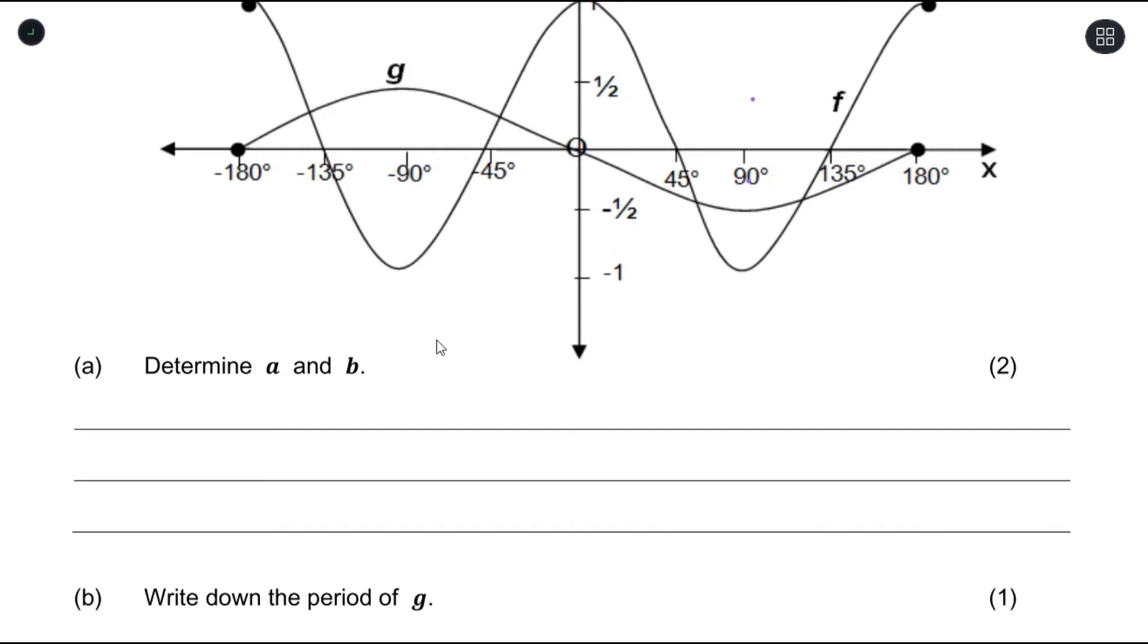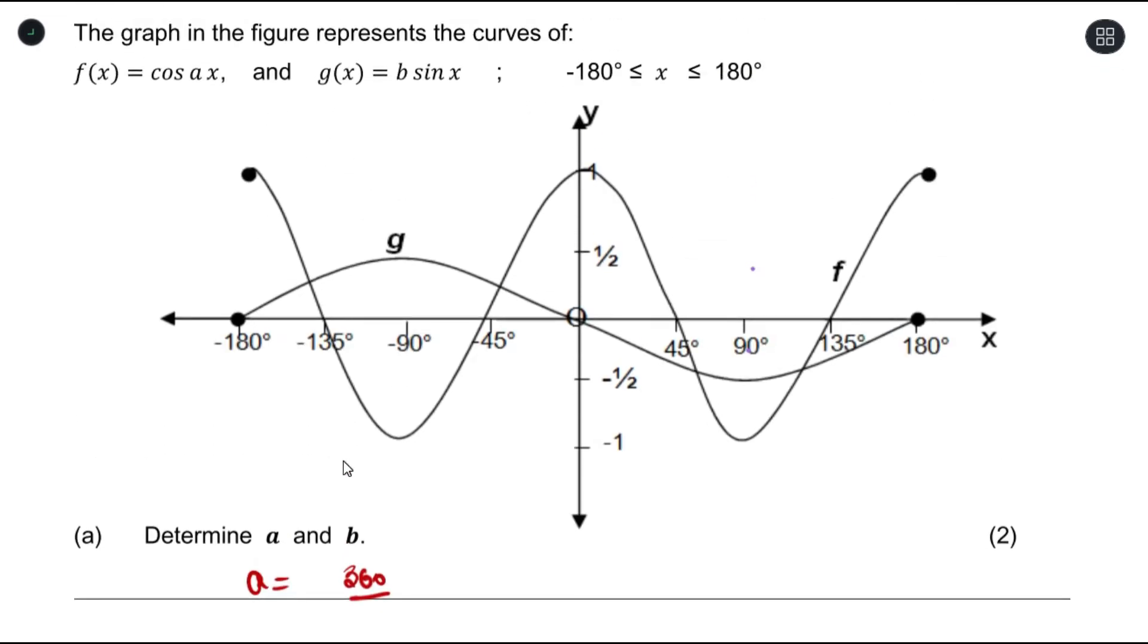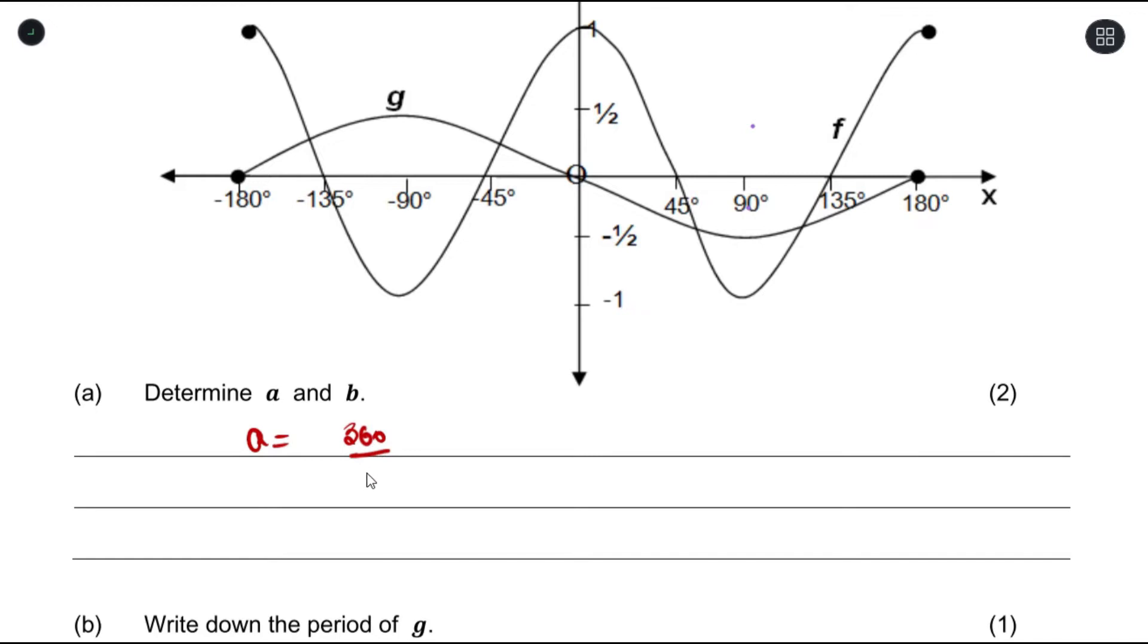So a is 360 divided by the period of the graph. The graph of f has period 180, so this is equals to 2. So a will be equals to 2.